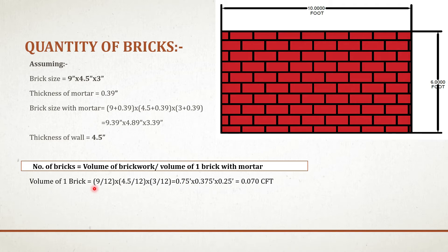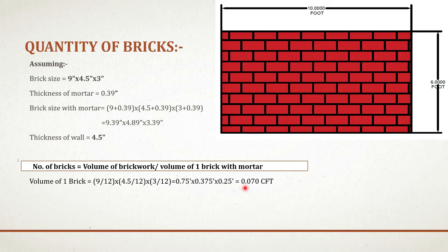For ease of calculation, I am converting these inch values into foot. As we all know, 1 foot equals to 12 inches, so you have to divide these values by 12. 9 divided by 12 equals 0.75 foot; 4.5 divided by 12 equals 0.375 foot; 3 divided by 12 equals 0.25 foot. If you multiply these three values, you will get one brick volume as 0.070 cubic foot.